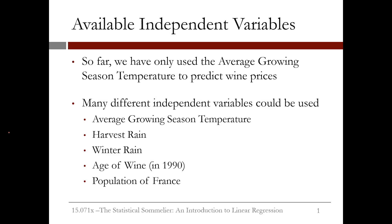In the previous video, we only used one independent variable. But there are many different variables that could be used to predict wine price. We used average growing season temperature, but we also have data for other weather-related variables: harvest rain and winter rain. Additionally, the age of wine is suspected to be important, and many other variables could also be used, such as the population of France.